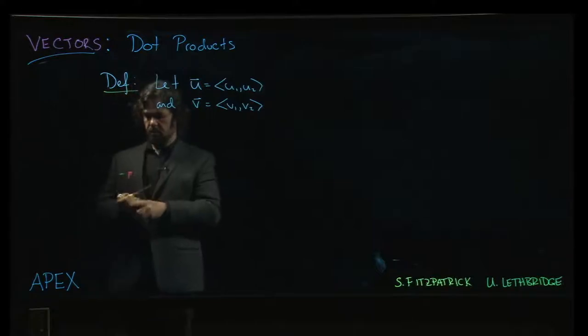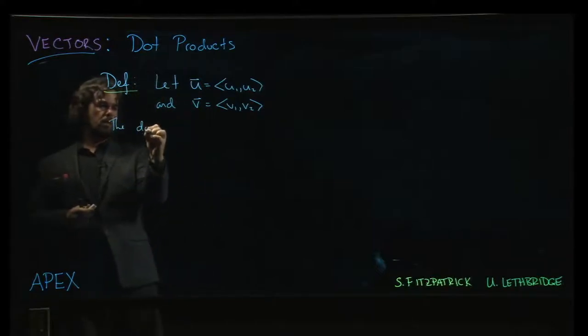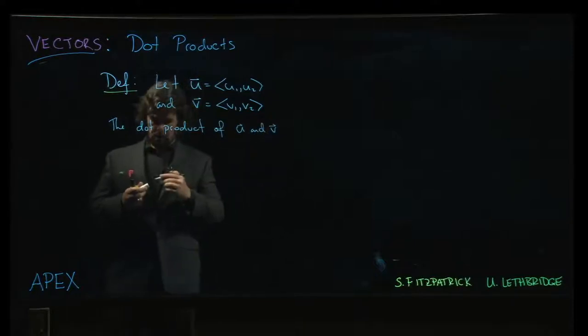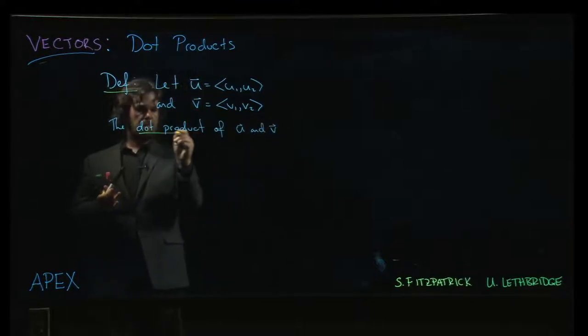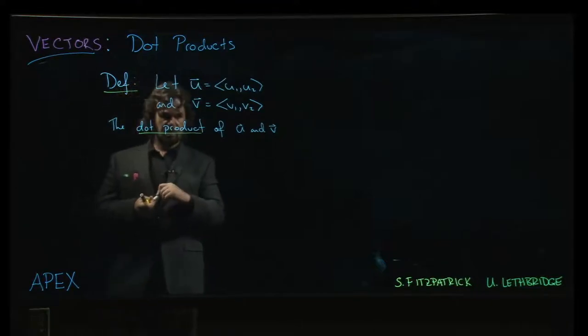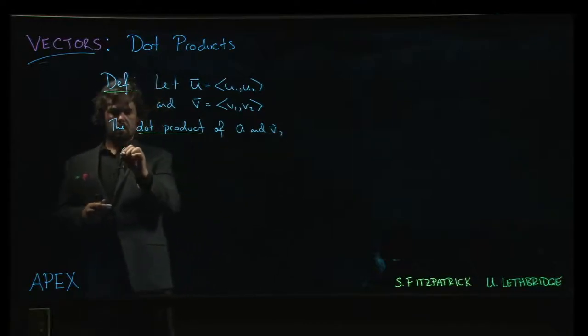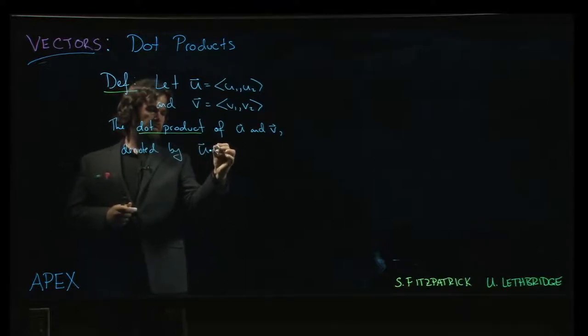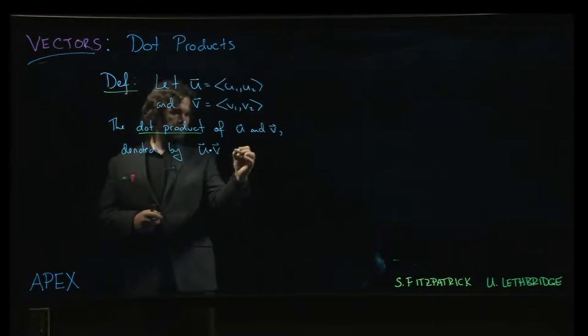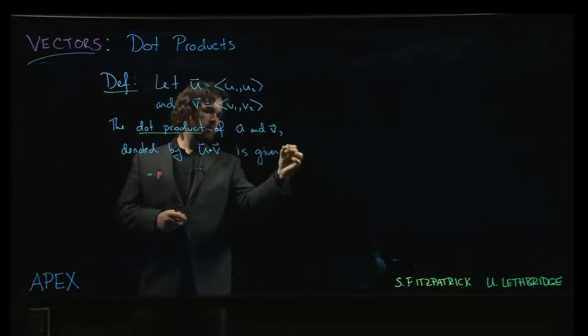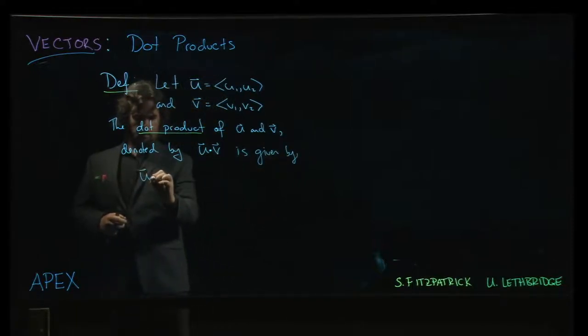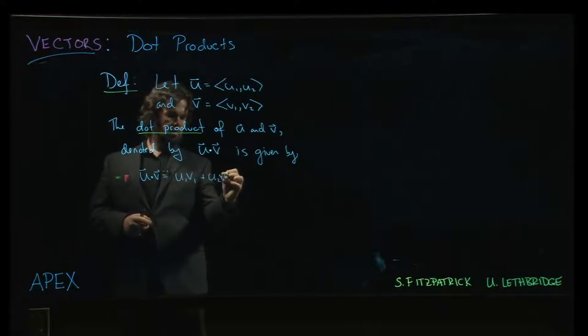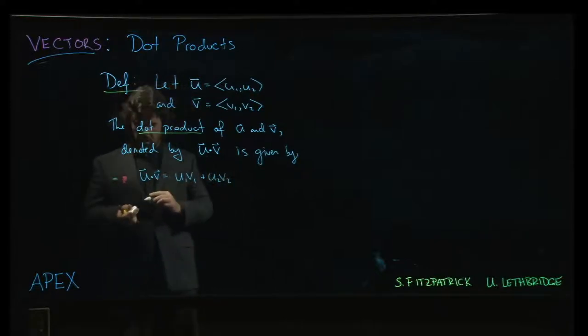So the dot product of u and v, which is denoted, now that the name comes from the notation, it's u dot v, sort of a bold dot in between. And it's given by u dot v is u1 times v1 plus u2 times v2. So that's the dot product.